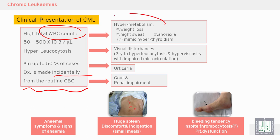Other patients complain of hypermetabolism symptoms — weight loss, night sweats, anorexia — mimicking hyperthyroidism. Visual disturbance due to hyperviscosity may also occur, along with urticaria due to release of histamine from basophils, gout, and renal impairment due to release of uric acid from the increased cell turnover.